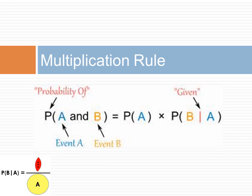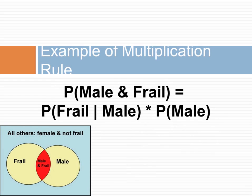Now that we have defined conditional probability, we can use it to calculate joint probabilities. The probability of two events occurring together — the joint probability — is the product of the probability of the event times the conditional probability of the other event. For example, the joint probability of being male and frail is the product of the probability of being male and the conditional probability of being frail given that you are male.